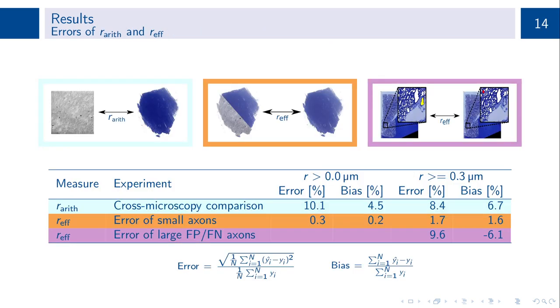The errors of the arithmetic mean and effective radius are summarized in the table in terms of normalized root mean square deviation and mean bias. Experiments were repeated with and without considering axons below the LSLM resolution limit of 0.3 microns.